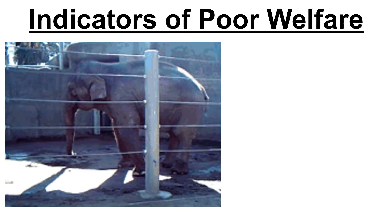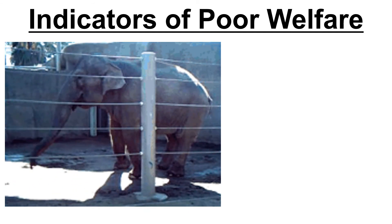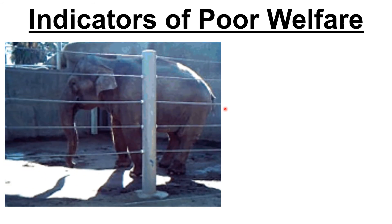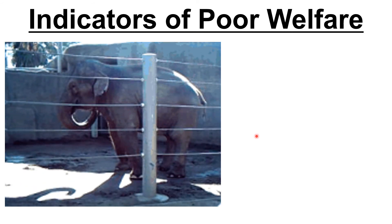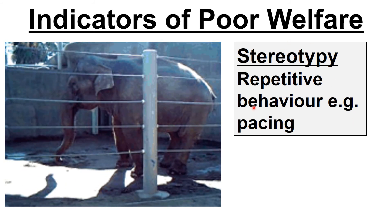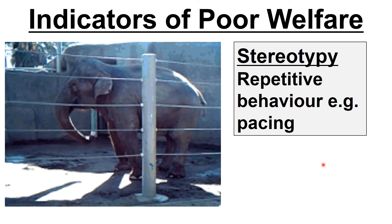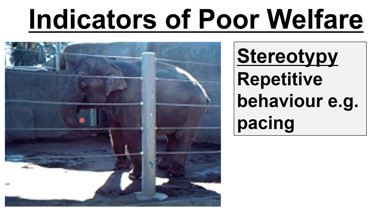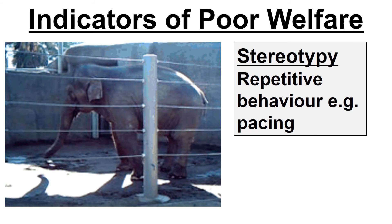If you're concerned that an animal's welfare may not be what it should be, what are the indicators? One thing you'll see is called stereotypy — repetitive behaviour. So it could be pacing back and forward. Here, the elephant is just moving its trunk back and forward repeatedly. That's one indicator of poor welfare.